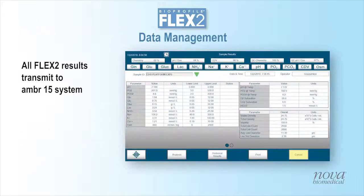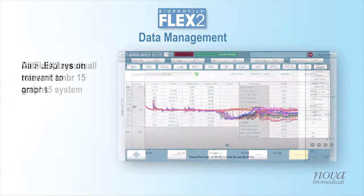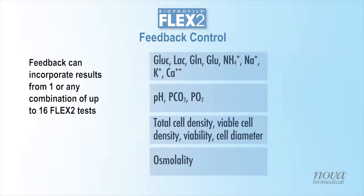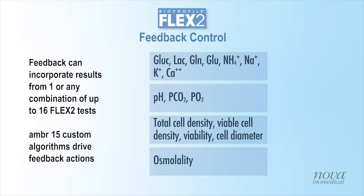When the analysis is completed, Flex2 immediately transmits all data to the AMBER15 software. Flex2 data is displayed on all relevant AMBER graphs. Algorithms utilizing one or any combination of up to 16 tests measured on Flex2 can be defined on the AMBER15 software for feedback control.